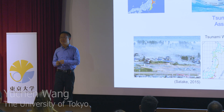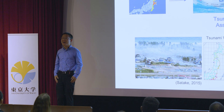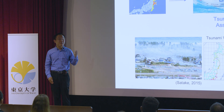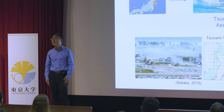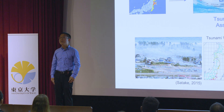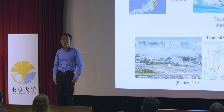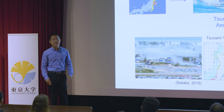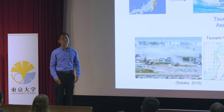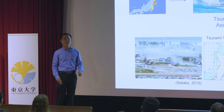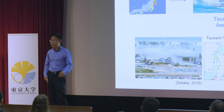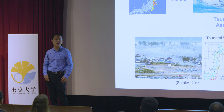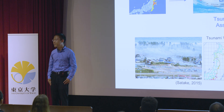We know that tsunami is a devastating natural hazard, especially in Japan. The 2011 Tohoku earthquake caused a huge tsunami that deprived thousands of people's lives and also created a nuclear explosion in the Fukushima Daiichi nuclear power station.